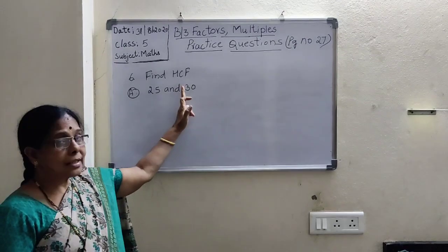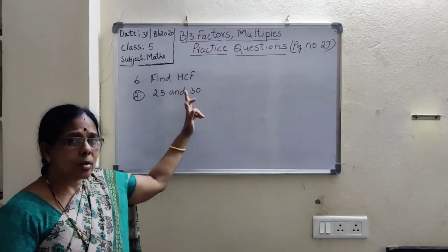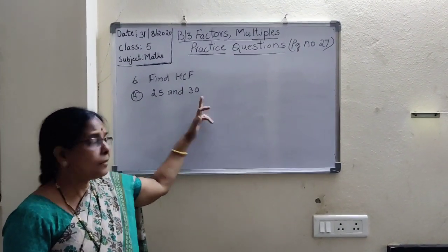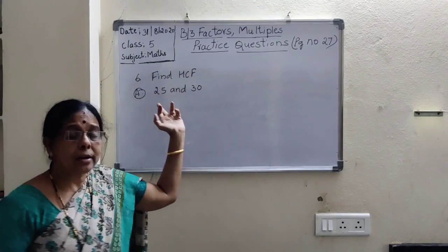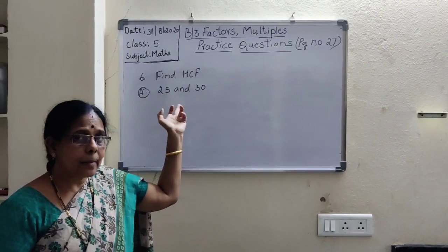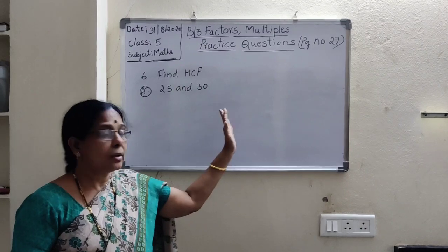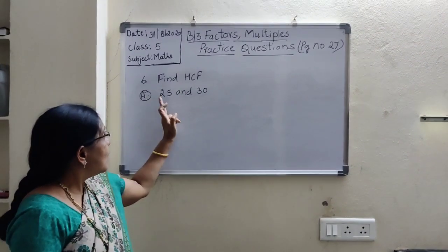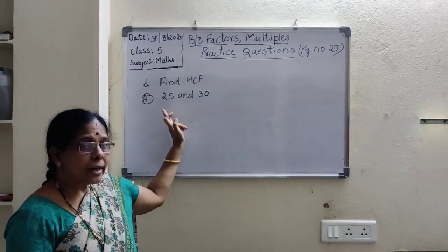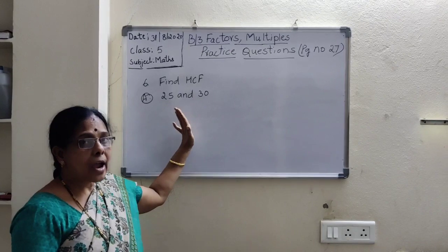Next, sixth bit: Find HCF. HCF means highest common factor. In fifth bit we found LCM — for LCM we write multiples. For finding HCF, we will write the factors.